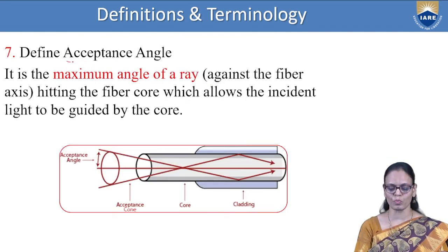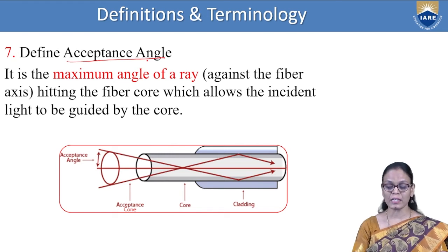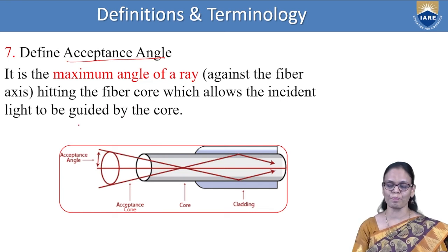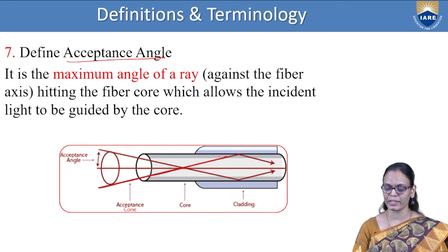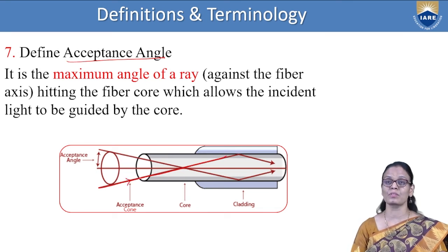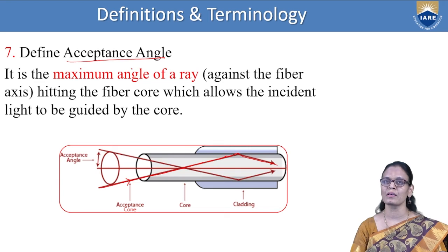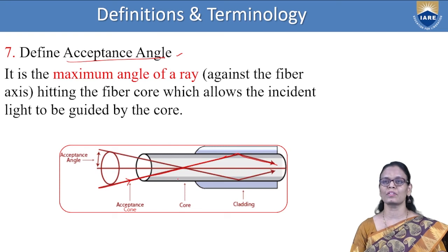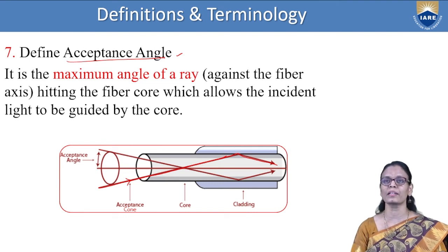Define acceptance angle. Acceptance angle is the maximum angle of a ray hitting the fiber which allows the light to pass through the core. It is the angle at which light must be incident inside the core so that it will travel through the core. If light is incident at an angle greater than this acceptance angle, it will not travel through the core and that signal is lost.